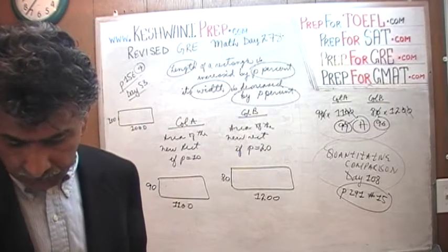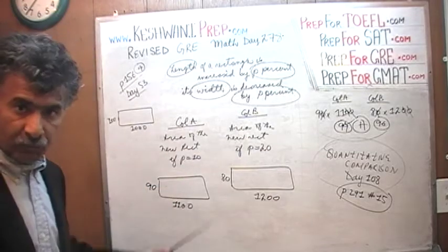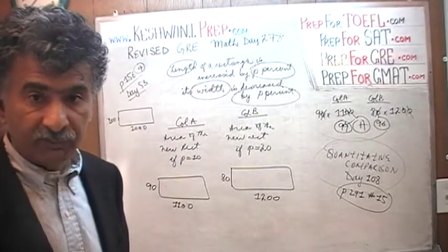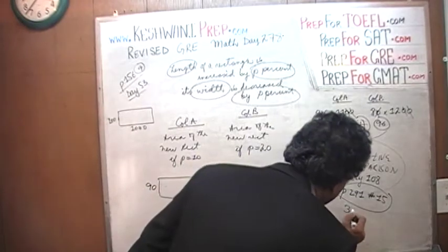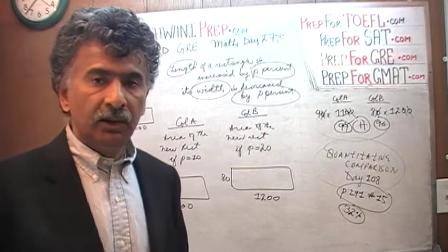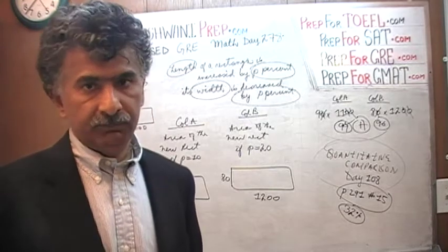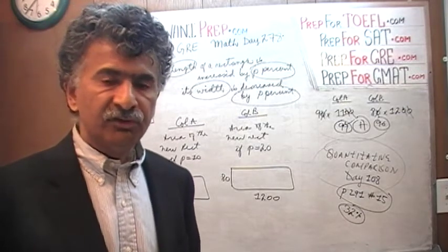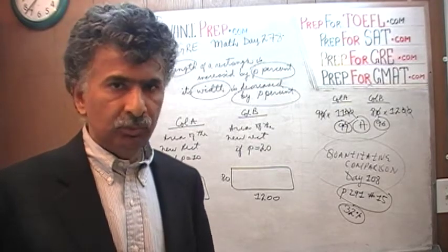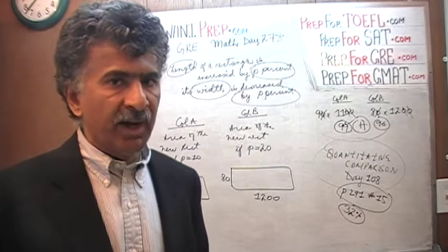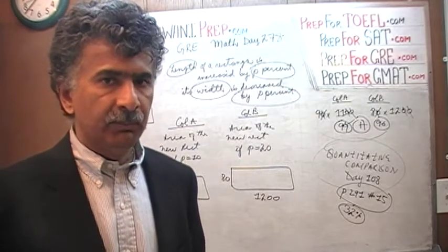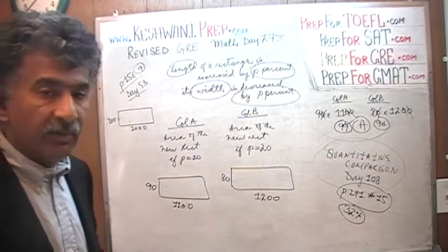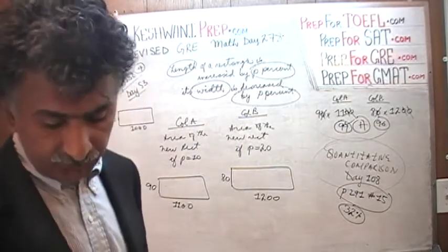The answer is A because 99 is bigger than 96. When this question appeared in the real exam, only 32% of people got it right — two thirds missed it because they tried to solve it algebraically. Don't do that. Make up numbers and plug in smart numbers. When dealing with percentages, smart numbers are 100 and multiples of 100.